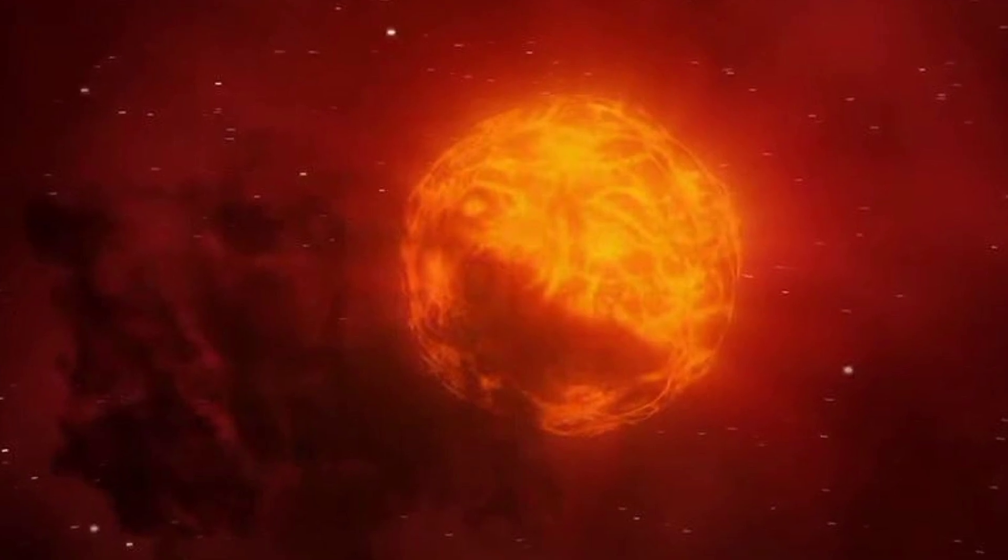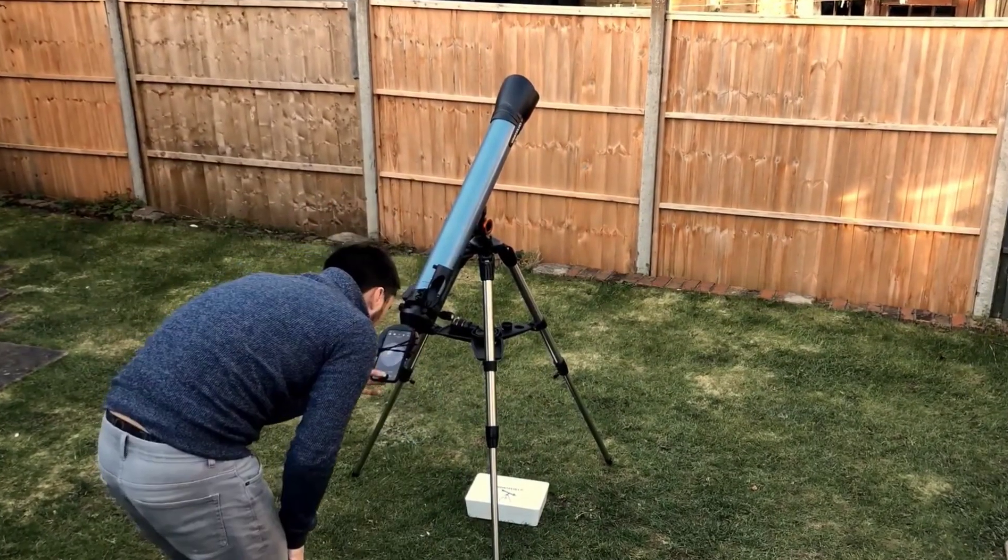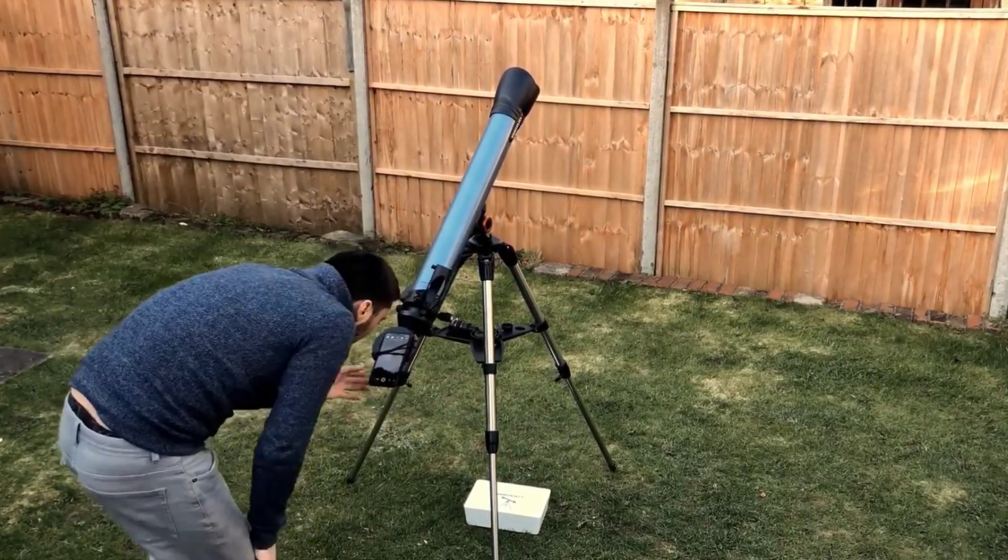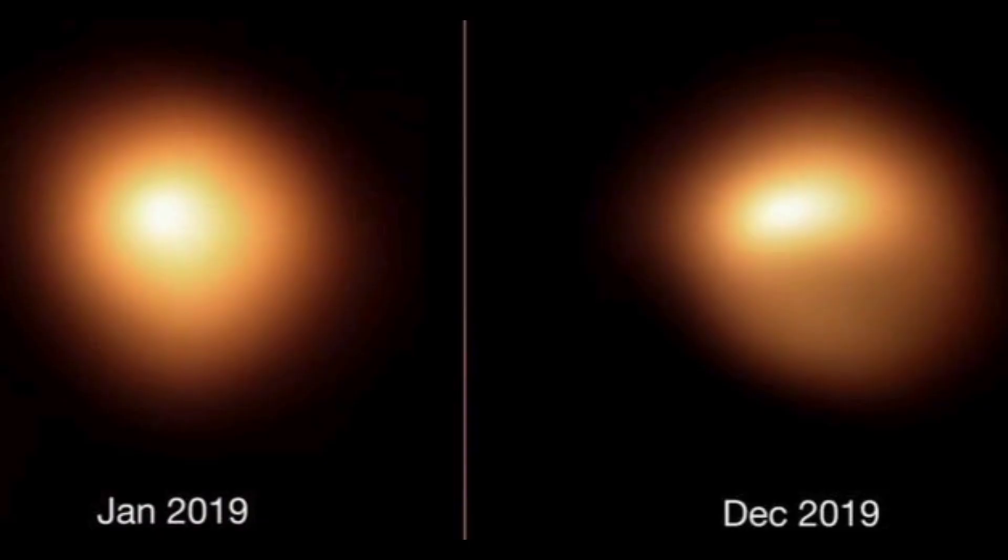Its immense size and mass categorize it as a red supergiant star that is nearing the end of its life. However, what intrigues astronomers is not that it's dying—stars die all the time—but its unusual dimming in late 2019 and early 2020 makes it special.